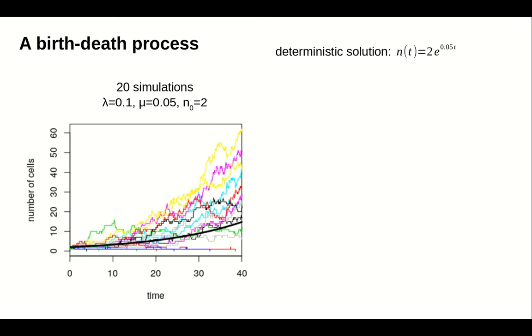Recall that if we increase the birth rate to 0.2 and the death rate by a corresponding amount to 0.15, the deterministic model is unchanged. The deterministic model is affected just by the difference between the birth and death rates, and so still exhibits exponential growth at the net growth rate of 0.05.